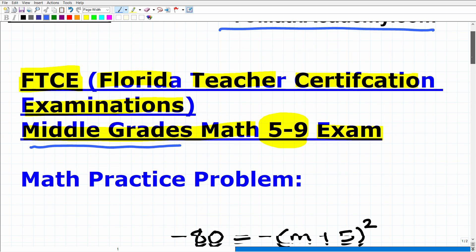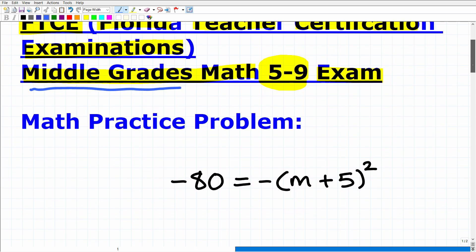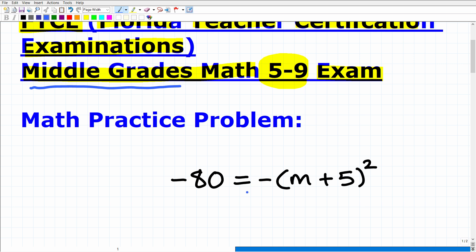So let's go ahead and get into this problem. Here is an equation: -80 = -(m + 5)². The objective here is to solve for m. So if you think you could do this, go ahead and pause the video and work on this. If you can successfully do this, it'll take you all a couple minutes to do. And one of the things I want to emphasize here is to make sure that your answer is fully simplified.